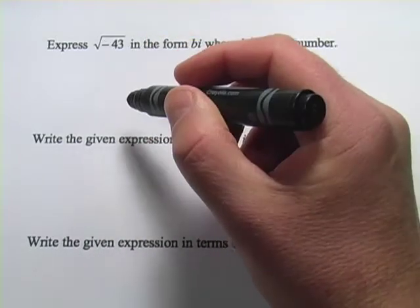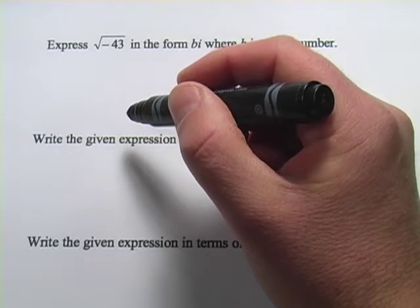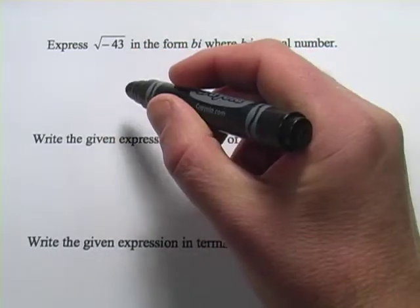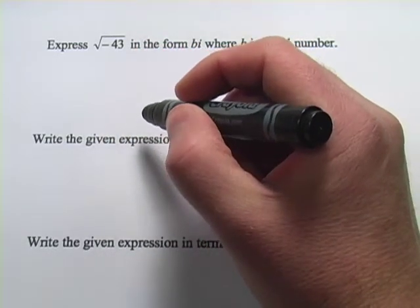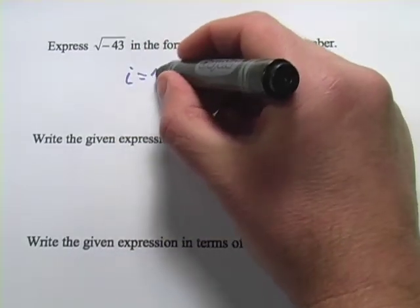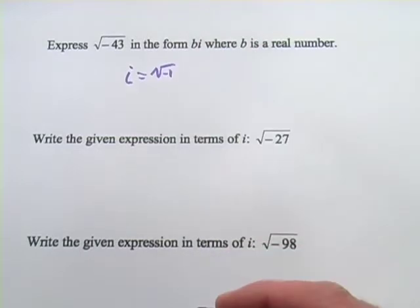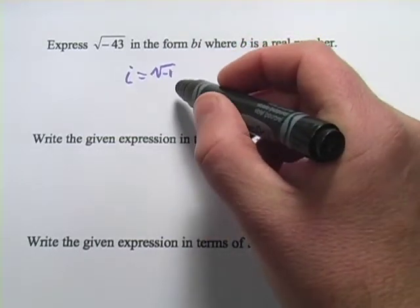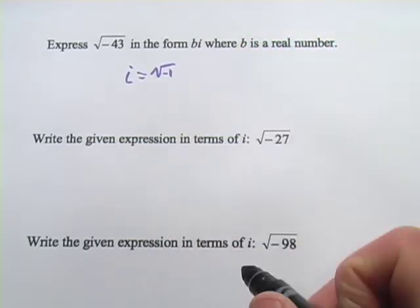But sometimes it's really useful to be able to do that. So, mathematicians made up this thing called an imaginary number. And the imaginary number i is just the square root of negative 1. We don't know what that value is or how you would calculate it, so we just call it i.